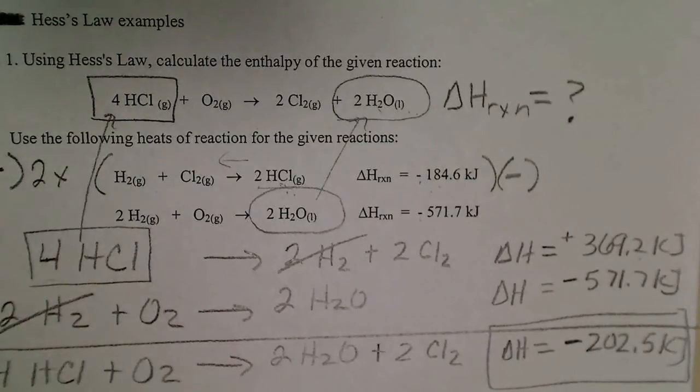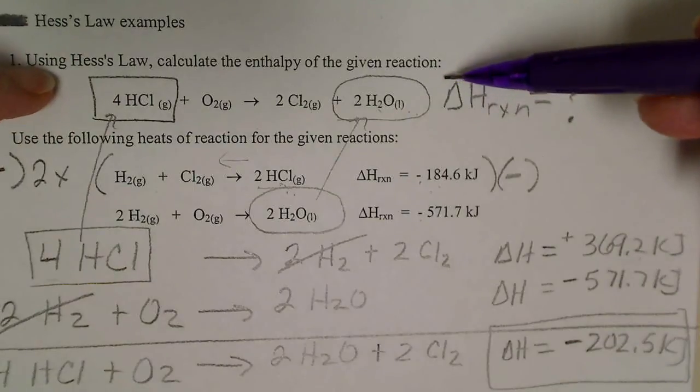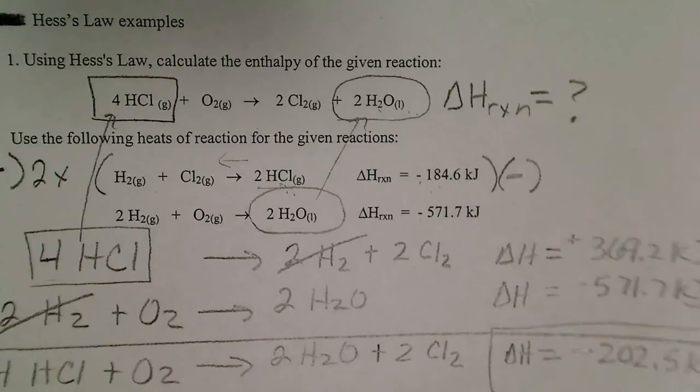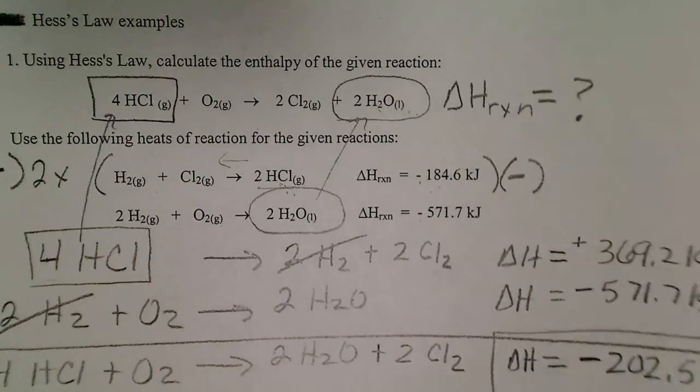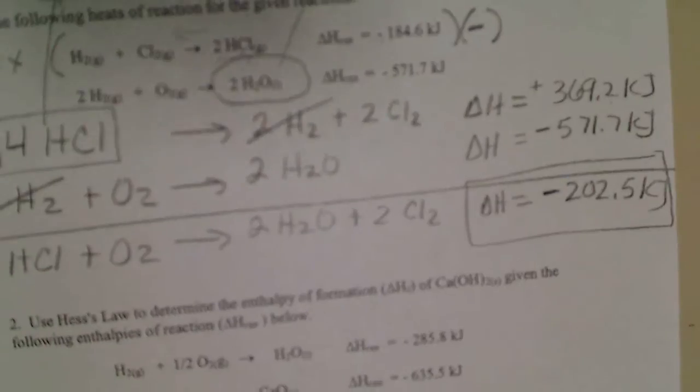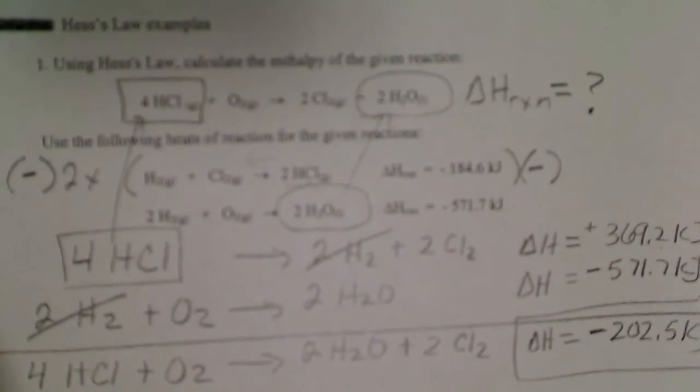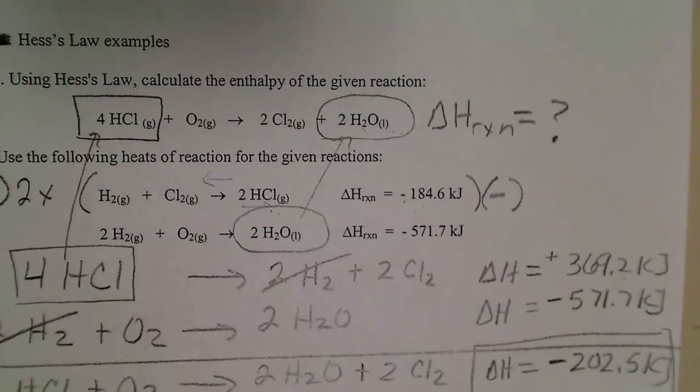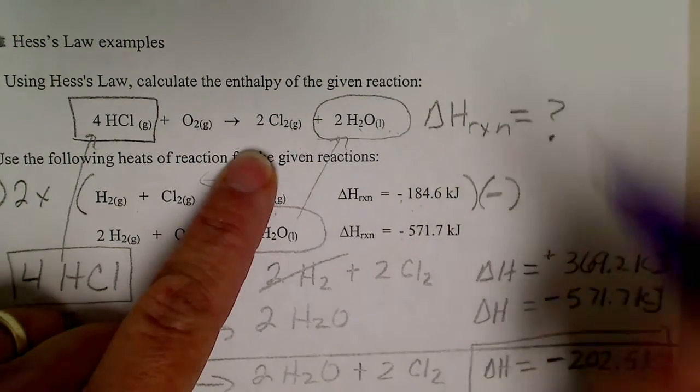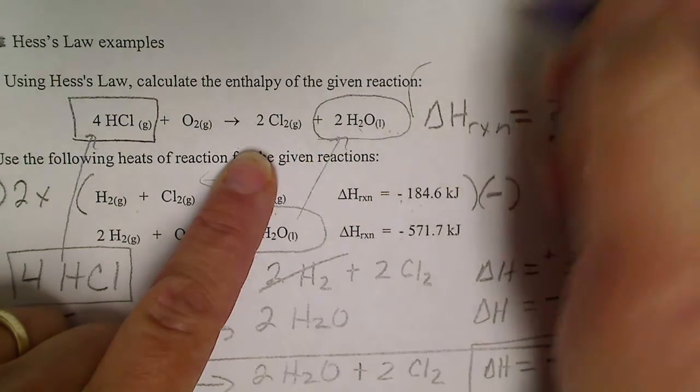Now in all reality, there would be no reason to go through this much trouble if we had values to look at from the back of the book. So we could do a quick check using the heats of formation from the back of the book and see that we'll get the same answer. So we'll keep that there.